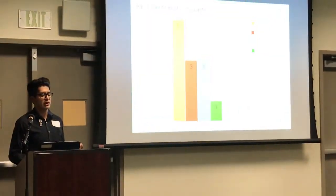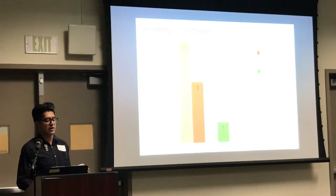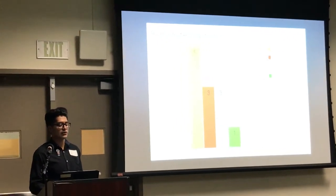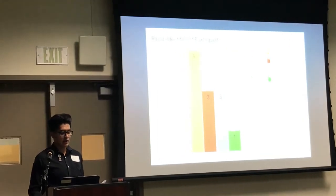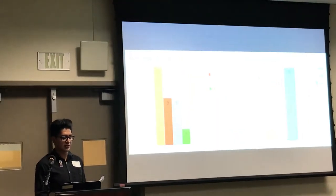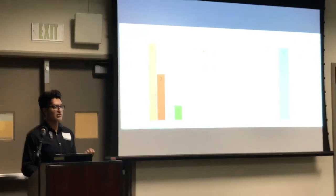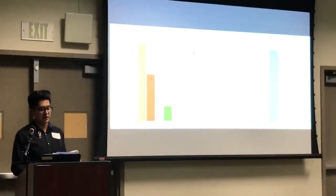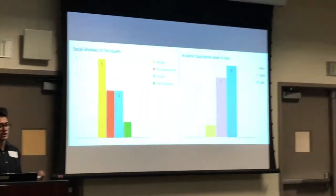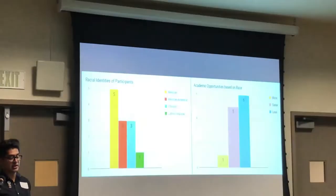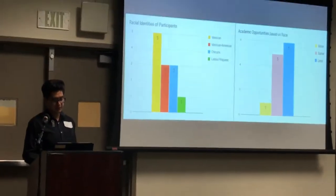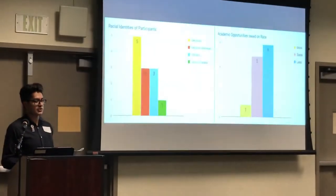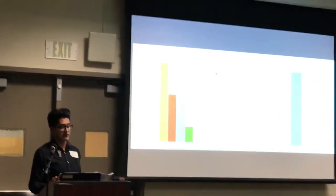In terms of racial identities, five identified as Mexican, three as Mexican-American, three as Chicanx, and one as Latino/Hispanic. I also asked participants whether they see themselves as having less, more, or the same opportunity as other students because of their racial identity. As you can see in the right chart, one student said they have more opportunity, five said the same, and six said less. This was actually quite opposite of what I expected — I anticipated more students to report even less opportunity.